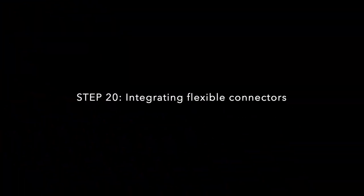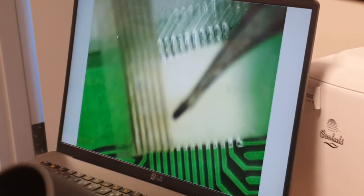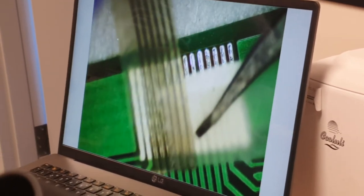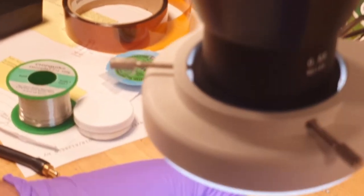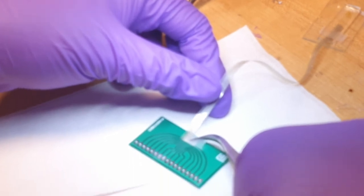We're ready to integrate the electric connections. Under our microscope, we carefully align the flexible ACF cable with the contact pads on the breakout PCB board and apply heat and pressure for adhesion.